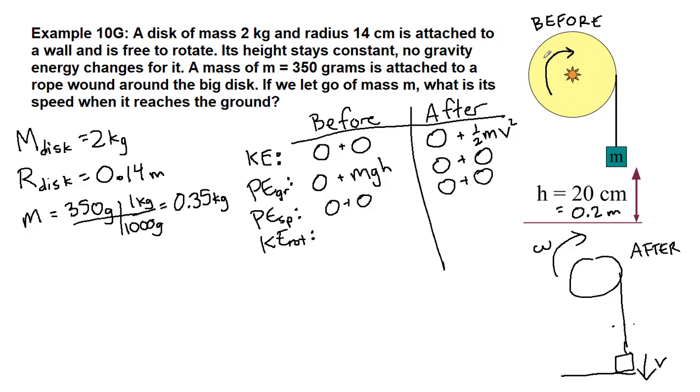Then the kinetic energy of rotation. We are asking, are we rotating at the beginning of the problem? Although it is free to rotate, it is not actively rotating yet. We're holding it in place still, so in the same way that everything is not moving, everything is also not rotating. At the end of the problem, the disk itself is rotating, so we will have one-half I of the disk omega squared. But this hanging mass is not rotating at all. It is simply falling straight down, so that's a zero.